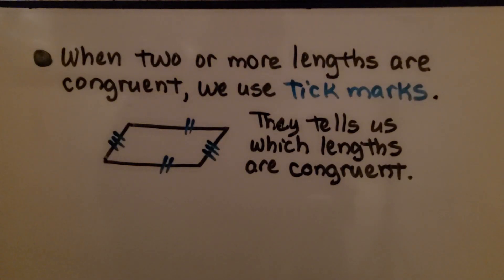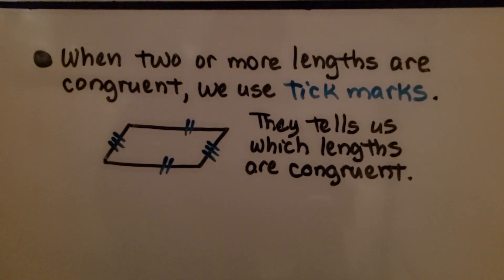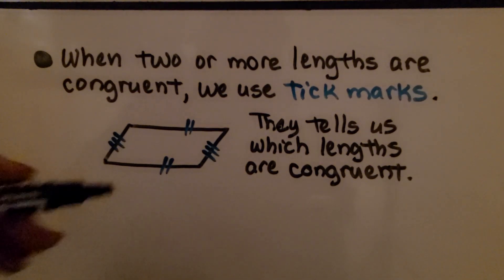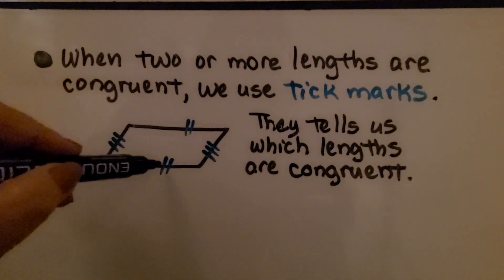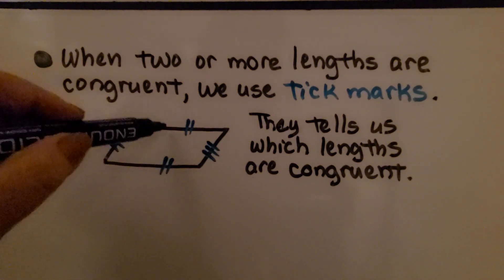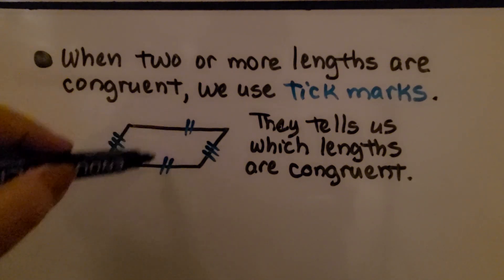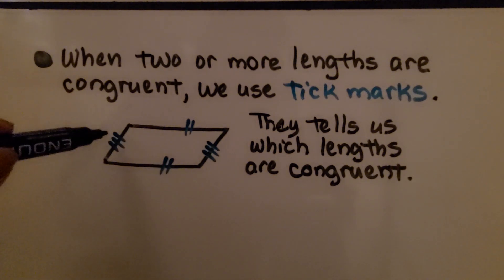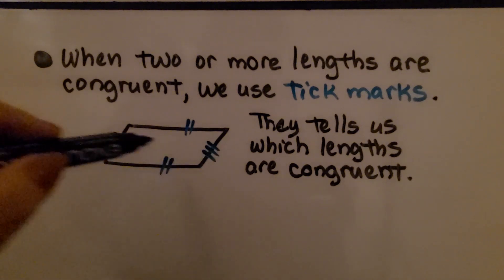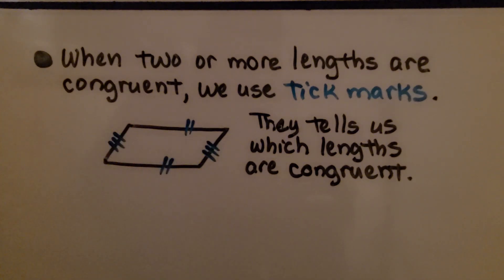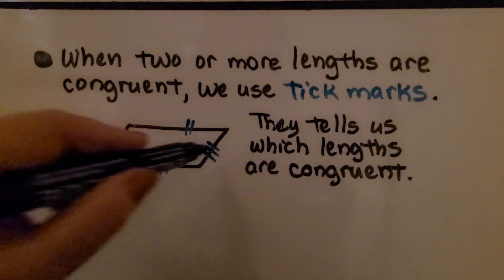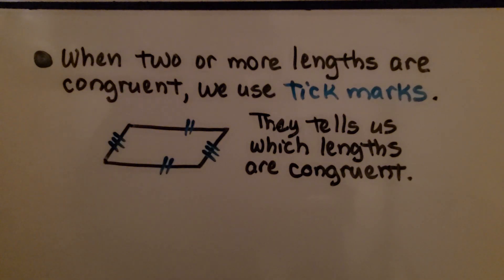When two or more lengths are congruent, we use tick marks to tell us which lengths are equal. Two tick marks on one side and two tick marks on another side means those sides are the same length. Similarly, three tick marks indicate those sides are congruent. We might also see one tick mark on each of two sides indicating they're equal.